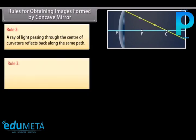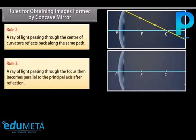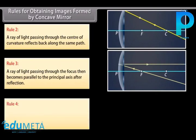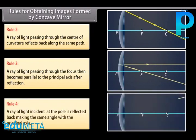Rule 3: a ray of light passing through the focus then becomes parallel to the principal axis after reflection. Rule 4: a ray of light incident at the pole is reflected back making the same angle with the principal axis.